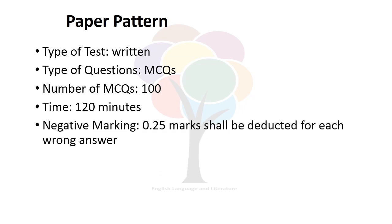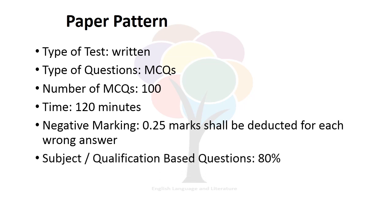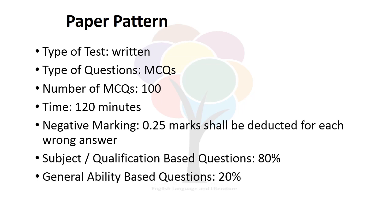The candidates often inquire about the negative marking. This should be noted that 0.25 marks shall be deducted for each wrong answer. So be careful while taking the option. 80% portion of the test is based on the subject or related qualification, that is MA in English. In this portion, the candidates are tested for the comprehension of their subject. 20% portion of the test includes general ability MCQs, so that the general ability of the candidates may be assessed.